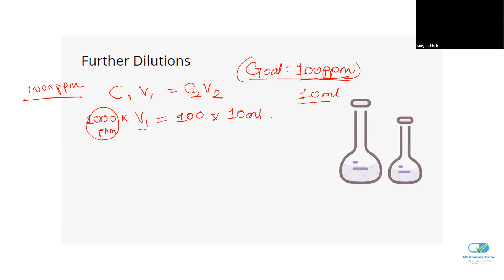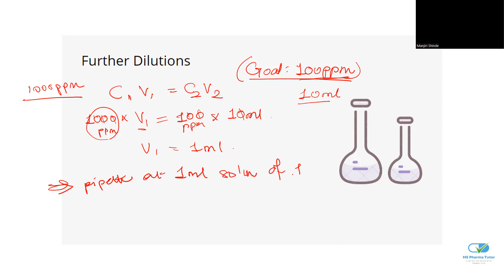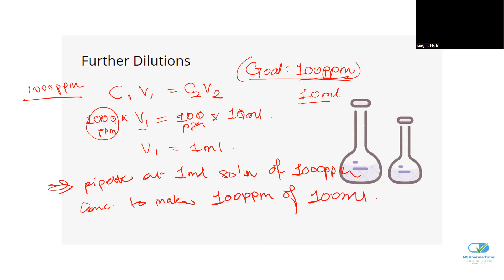Now let's look at the calculation: the zeros cancel out — all three zeros — and what we end up with is 1 ml. So the conclusion is: pipette out 1 ml of the 1000 PPM solution to make a 100 PPM solution of 100 ml.